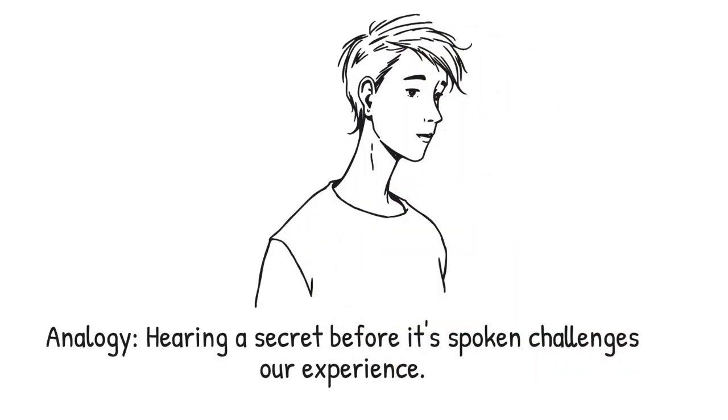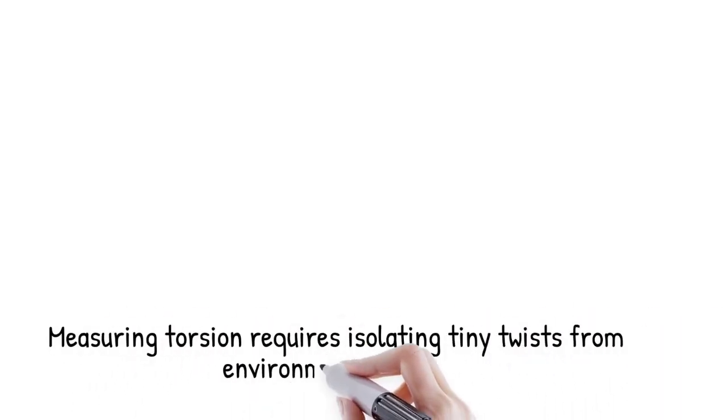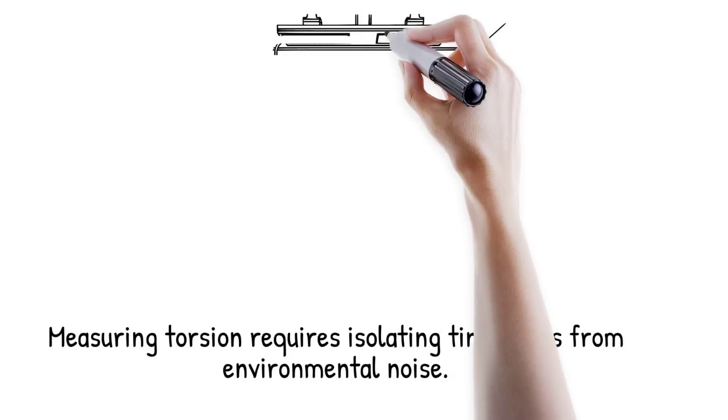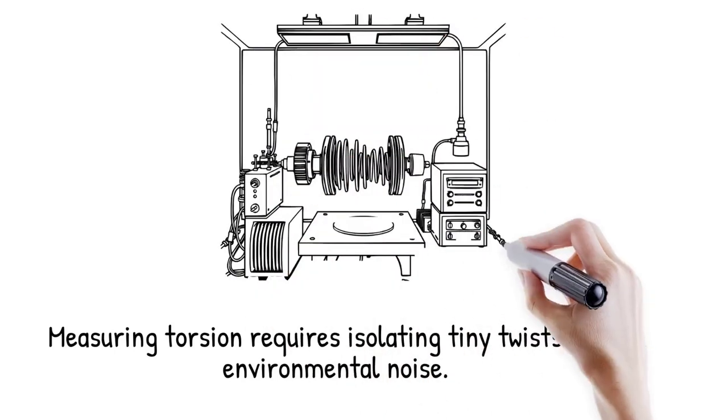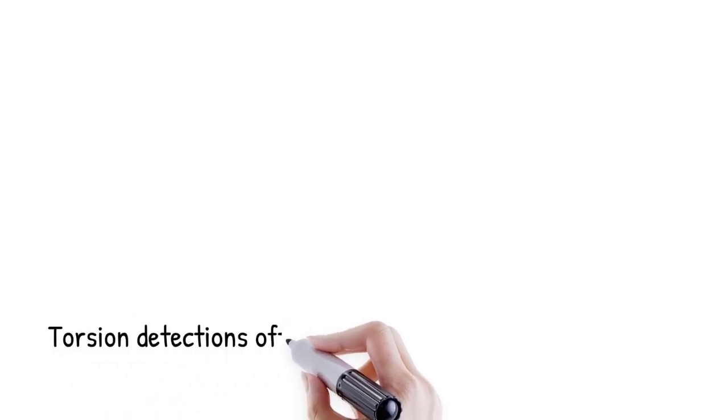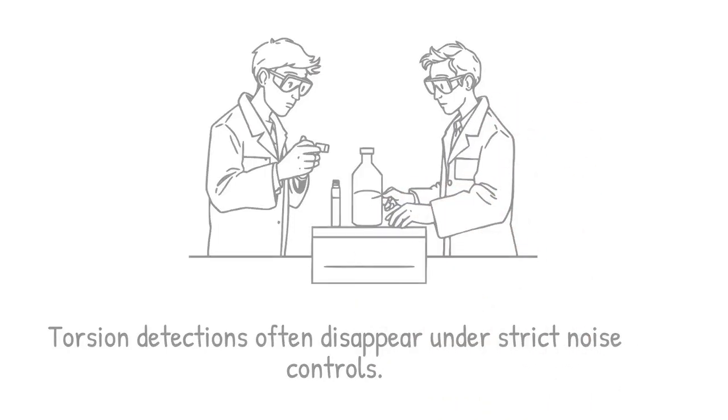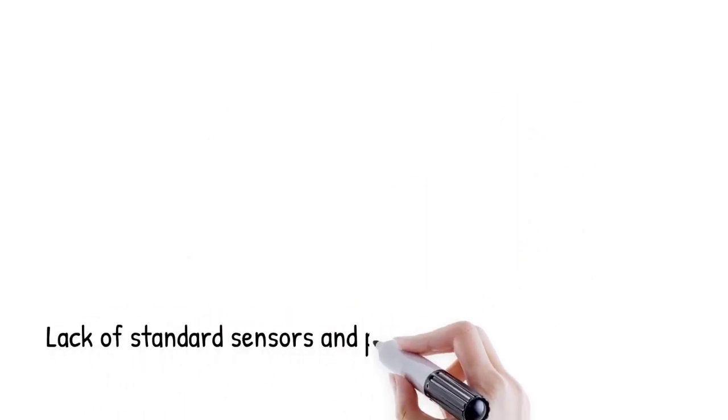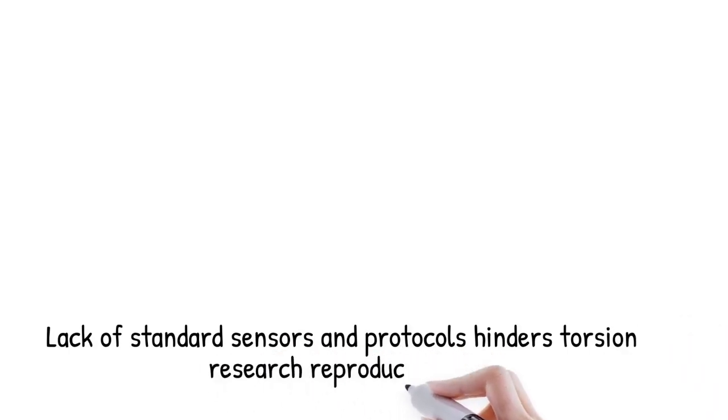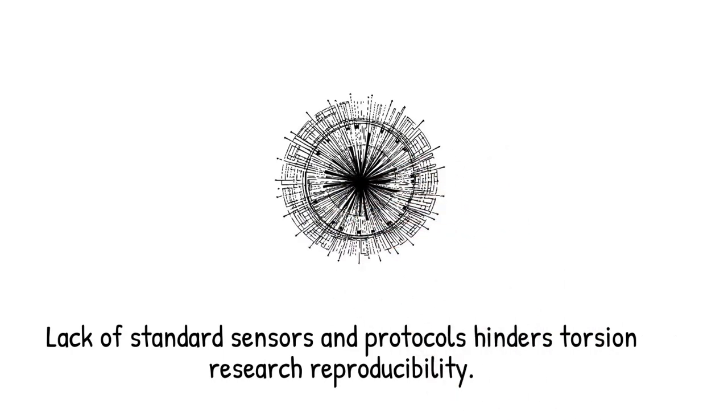Measuring torsion requires isolating infinitesimal twists from overwhelming environmental noise: vibrations, temperature drifts, and electromagnetic interference. Many claimed detections vanish when laboratories employ more stringent noise controls and calibrated null experiments. The absence of standardized torsion field sensors and agreed upon protocols compounds the reproducibility crisis. And without robust and repeatable evidence, the hypothesis remains in the realm of speculation.